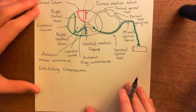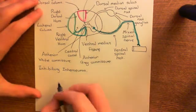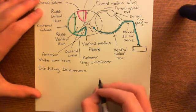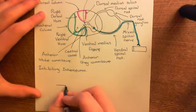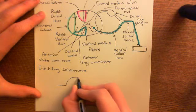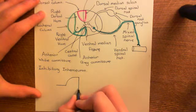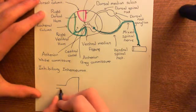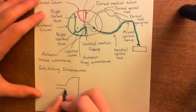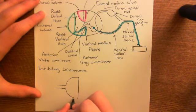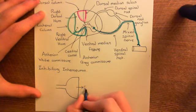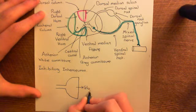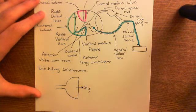If we show this synapse in a bit more detail, what we'll have is the axon terminal of the inhibitory interneuron, which will be glycinergic — it will be releasing glycine. This axon terminal is releasing glycine, and the three-letter amino acid code for glycine is GLY.